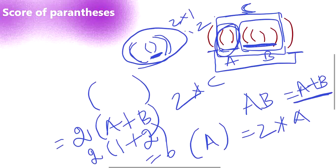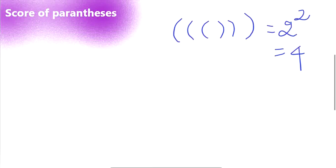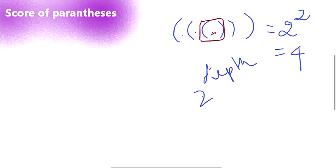So how are we overall going to approach this? The score of valid parentheses is going to be 2 power depth. We are going to use a variable called balance to keep track of how many open brackets we encounter, then start iterating through the string.